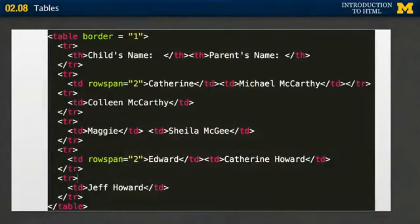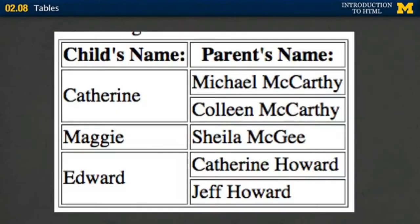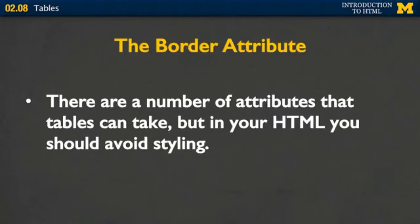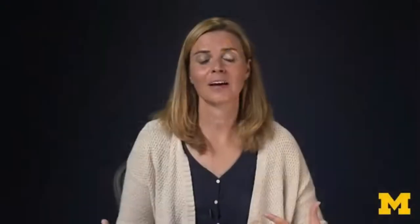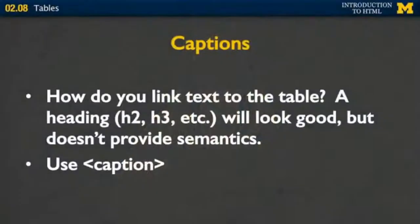You might have noticed at the very top of the table I included a border attribute. I did that because it's much easier to see the rowspan when you have lines around each cell. You can use the border attribute to put lines between each one of your cells, and it's very common to do that. But in your HTML I try to avoid styling — it's something we can add later if you decide to learn more about CSS — but it's an attribute so commonly used I wanted to include it so you could see what was going on.